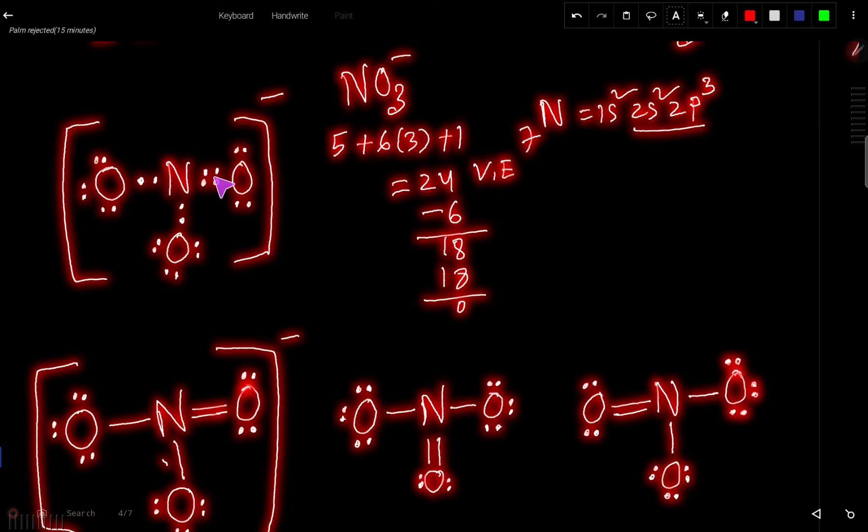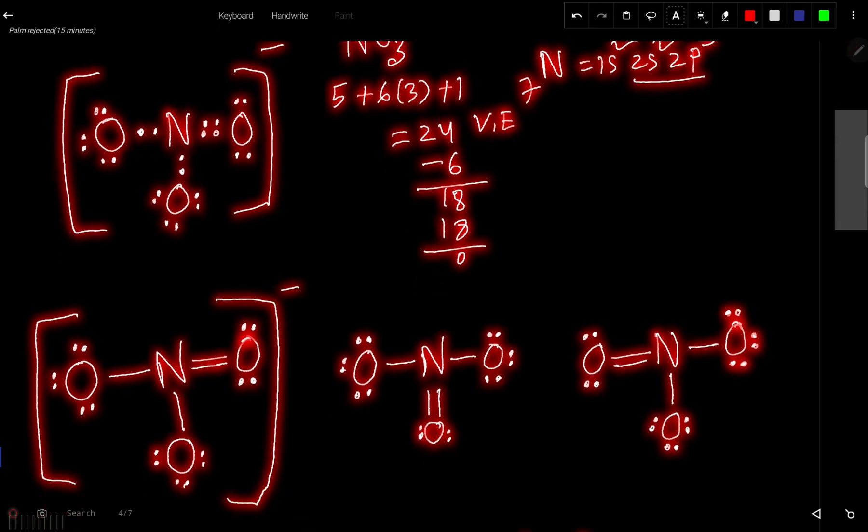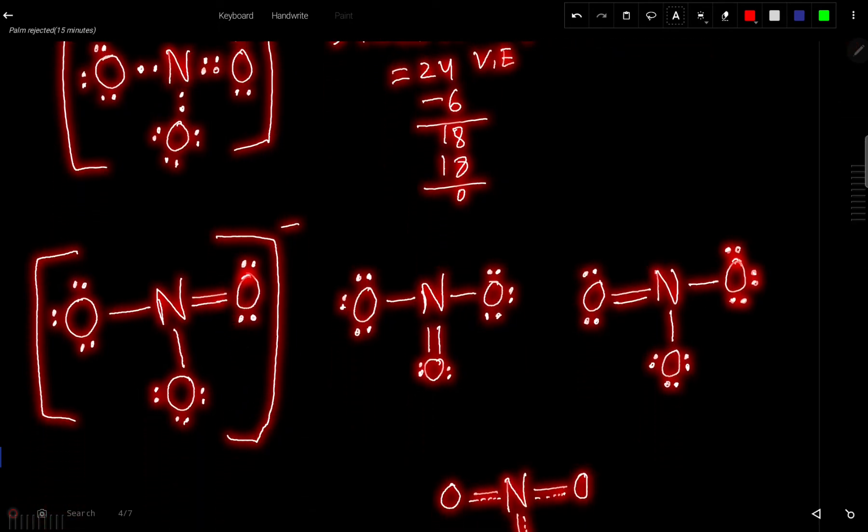This bond pair can be expressed by dash. So two bond pairs, two dashes. Single bond pair, single dash. So we are getting this. So this or this are the Lewis structure of NO3 minus.